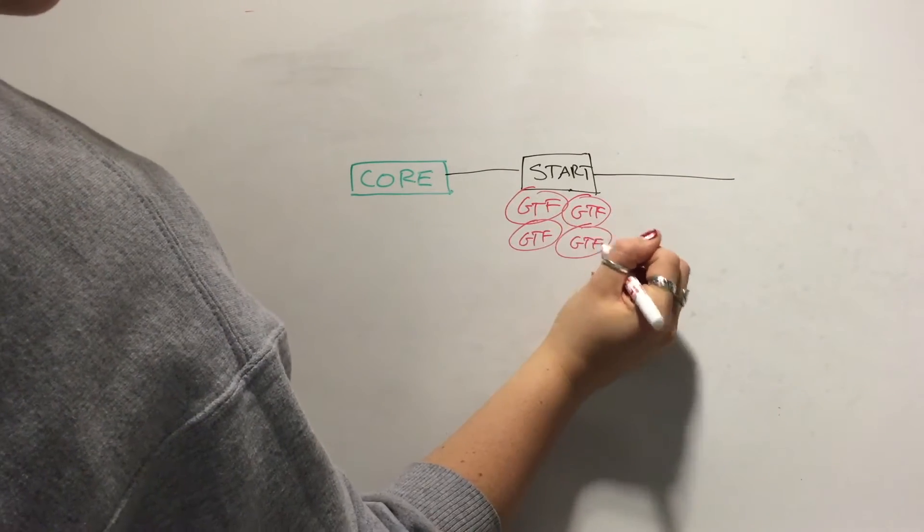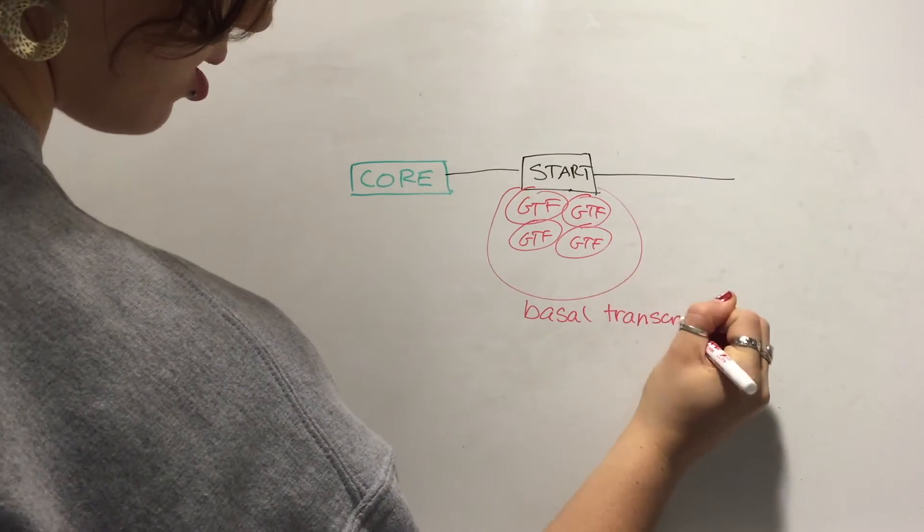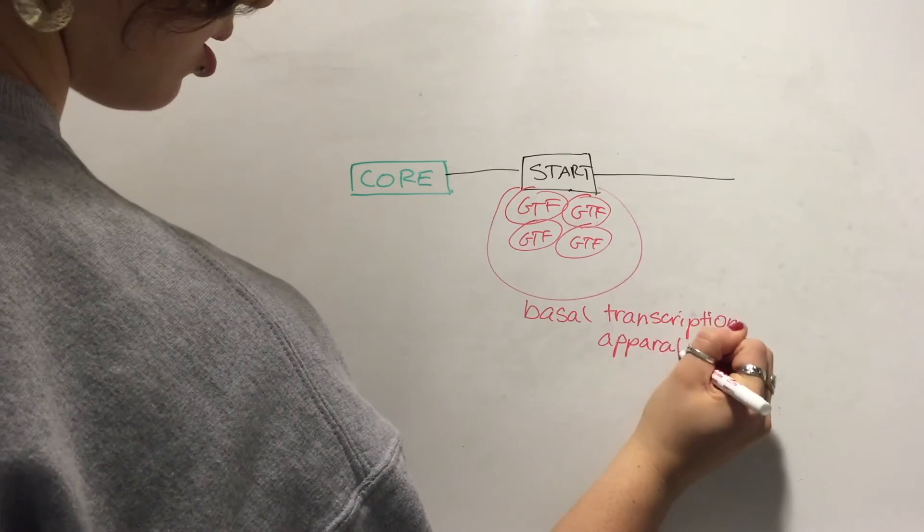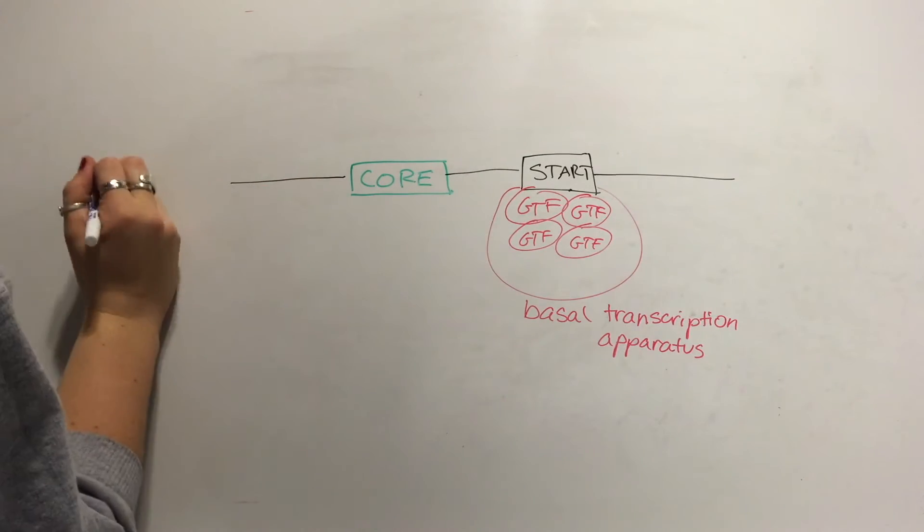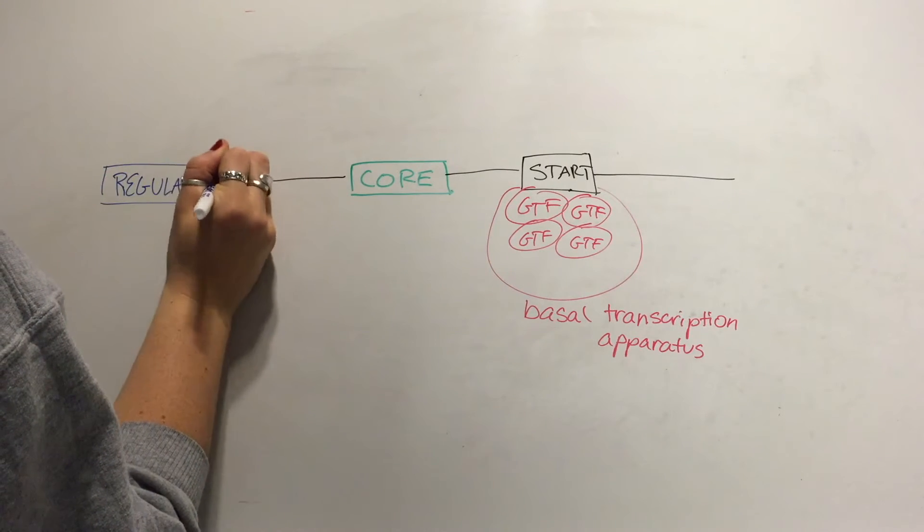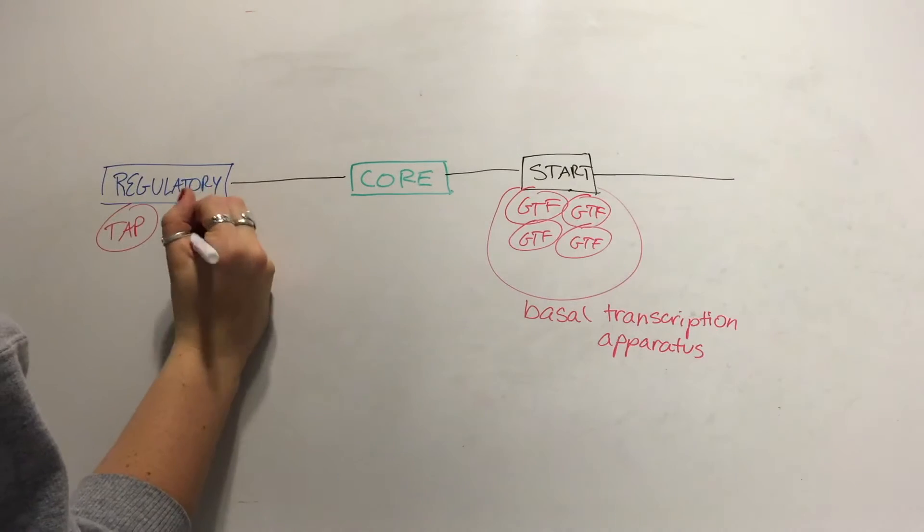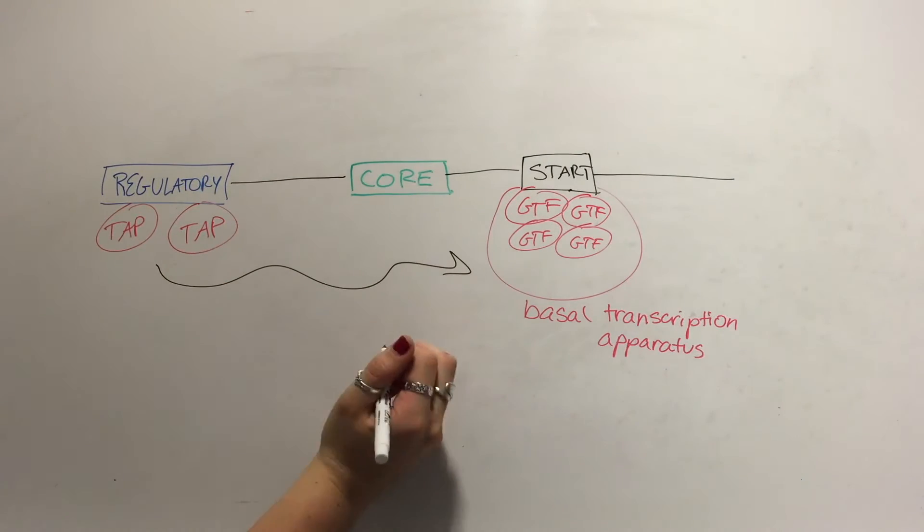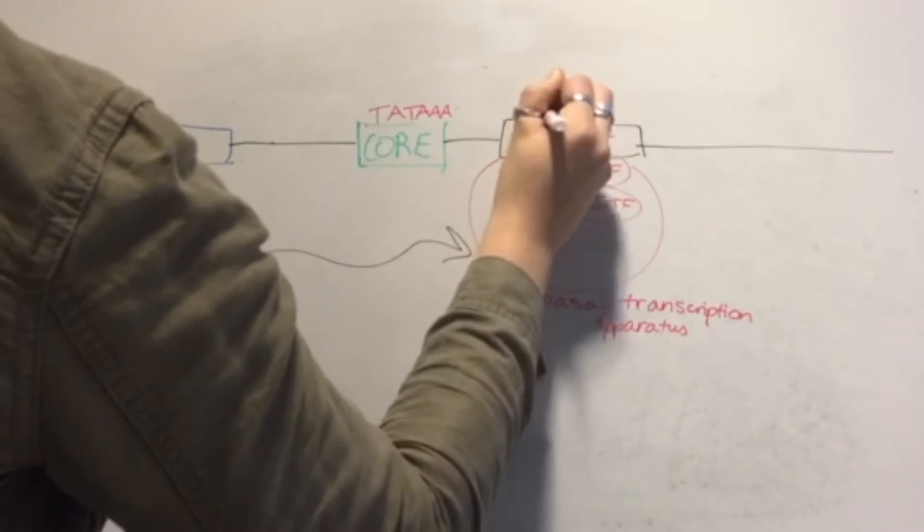This binds to the start codon, which is downstream of the core promoter. Upstream of the core promoter is the regulatory promoter region. Proteins called transcriptional activation proteins bind to various consensus sequences on the regulatory promoter. These proteins stimulate the assembly of the basal transcription apparatus, effectively regulating the speed of transcription.